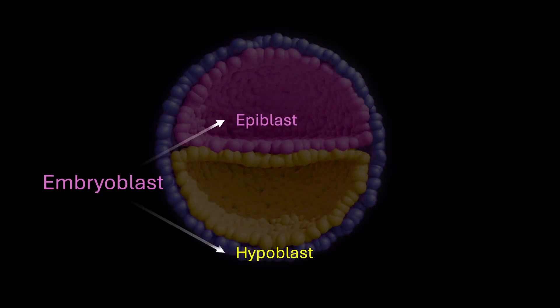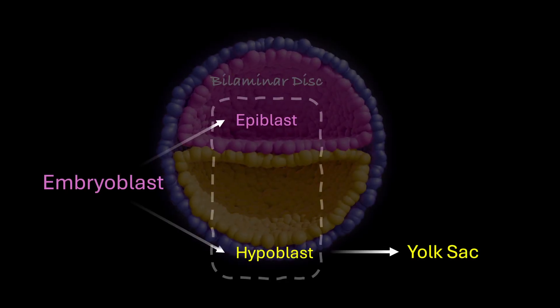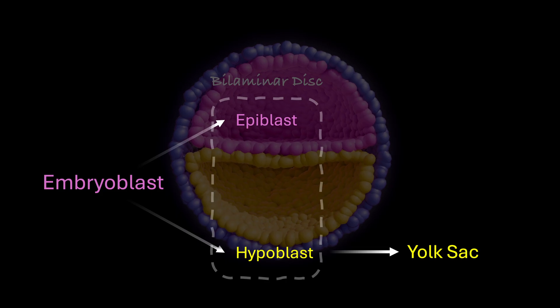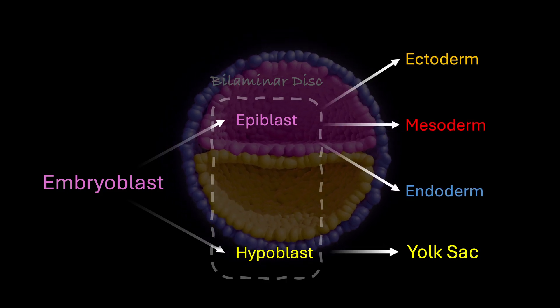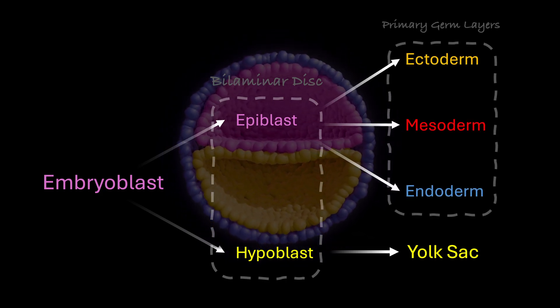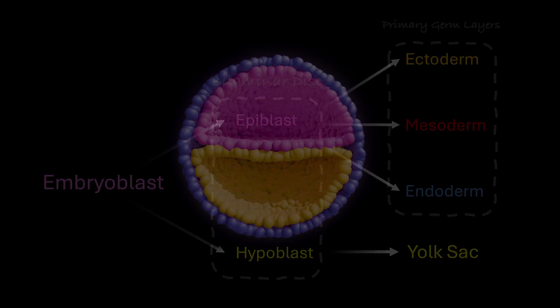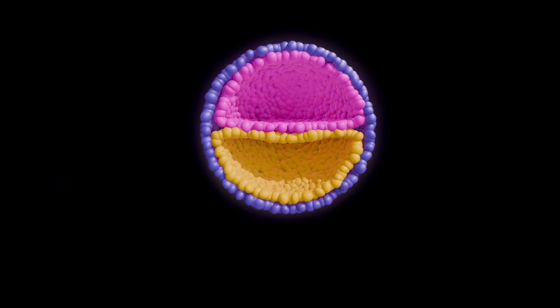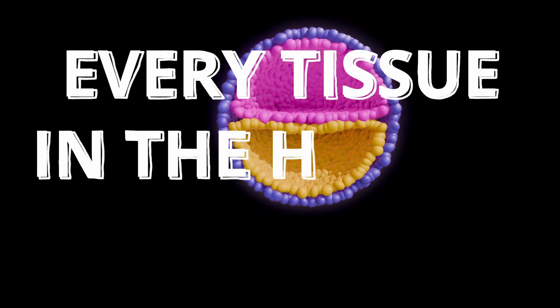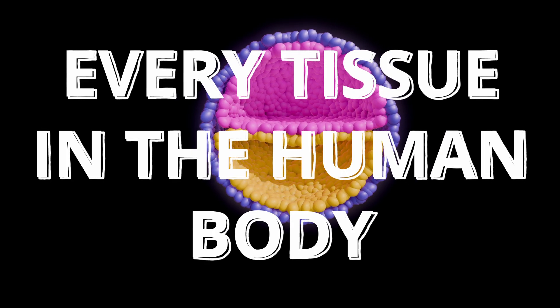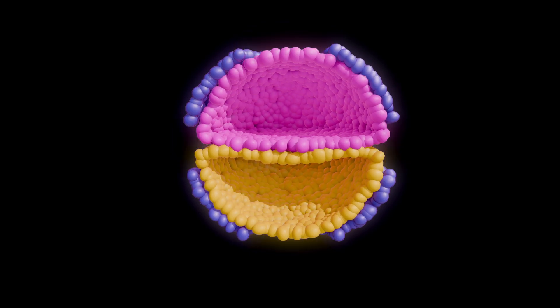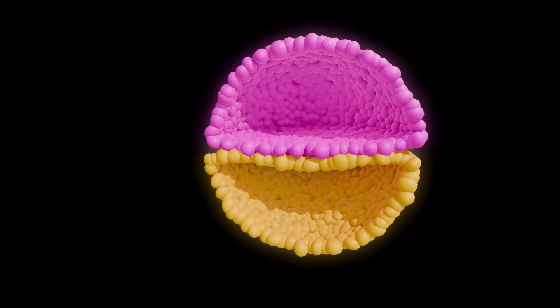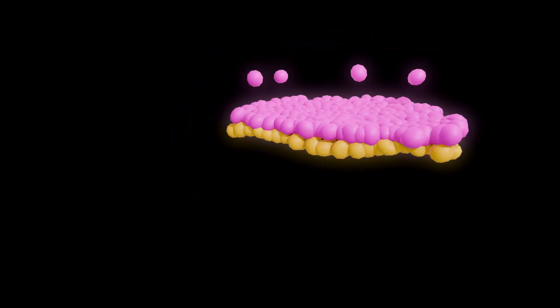Then comes week three, and that's when things really begin to get spicy. Through gastrulation, this flat two-layer disc transforms into three germ layers: the ectoderm, mesoderm, and endoderm. So why would we dedicate an entire episode to this process? Because these layers are the source of every tissue in the human body. We're going to do some cropping to focus on the disc, but remember, the yolk sac and the amniotic sac are still there.